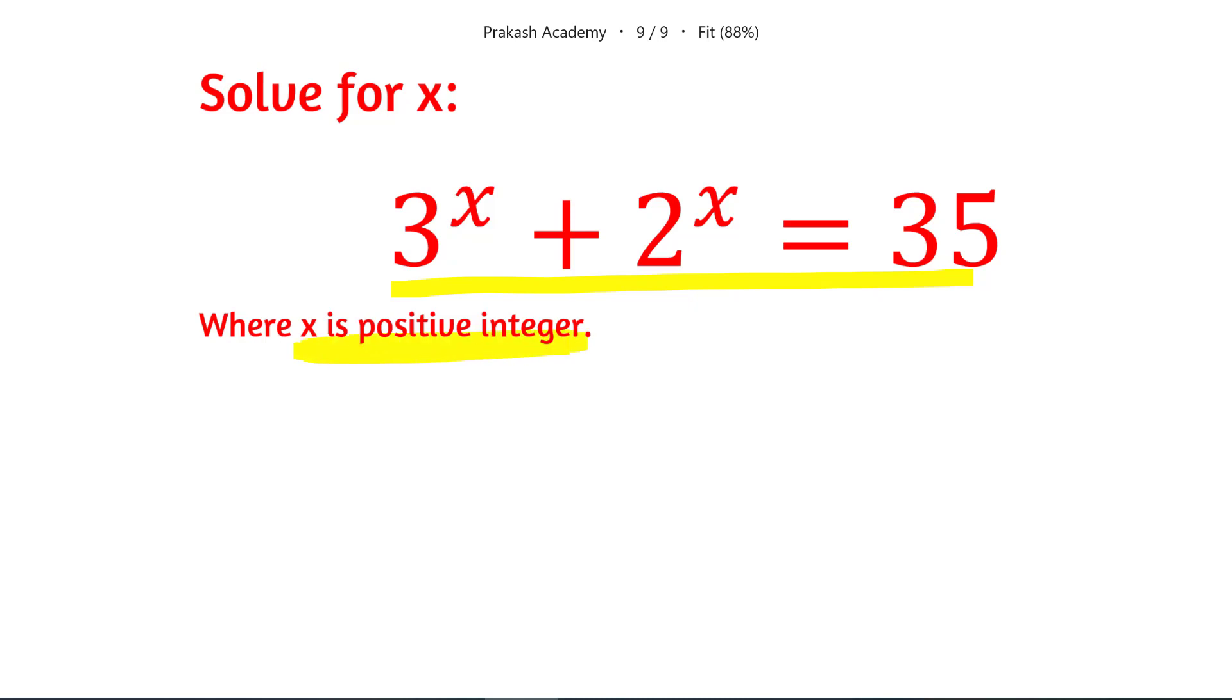In this problem we have to find value of X, but X is positive as well as an integer. Now you can solve this problem just by looking at it. You see this contains a term 3 raised to the power X and the right hand side we have 35.